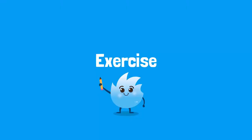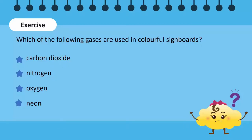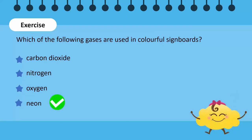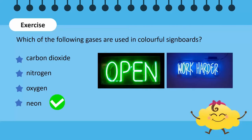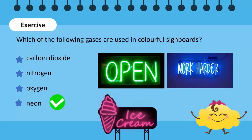Which of the following gases are used in colourful signboards? Neon glows when electricity is passed through it. Different coloured neon lights are made by adding a coating inside the glass tubing.